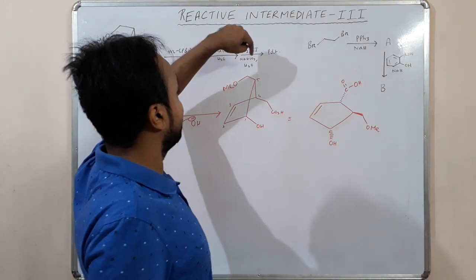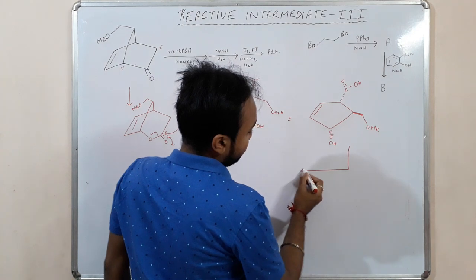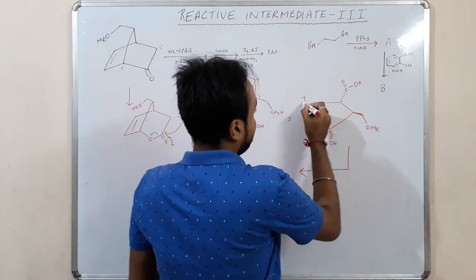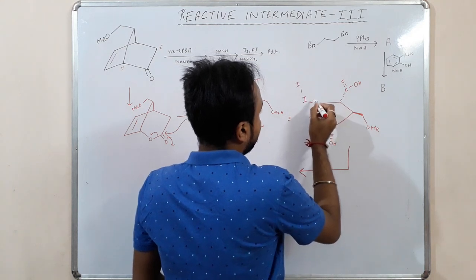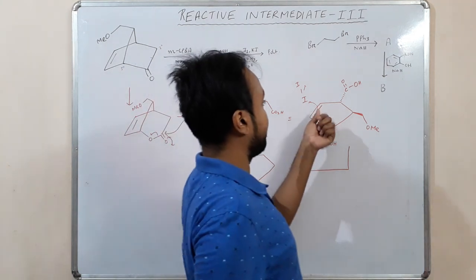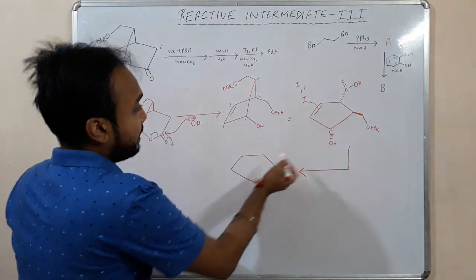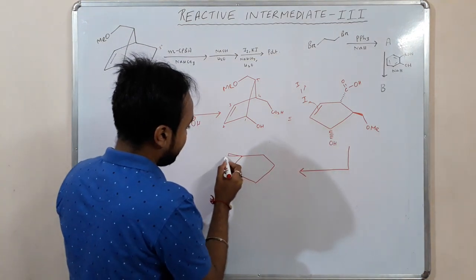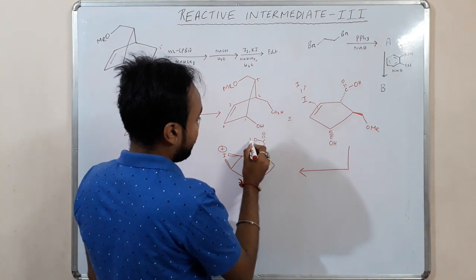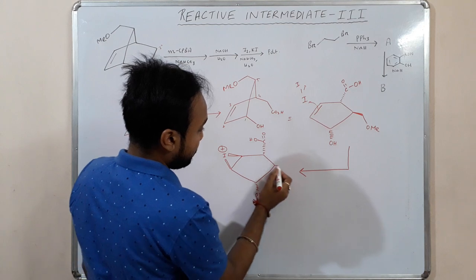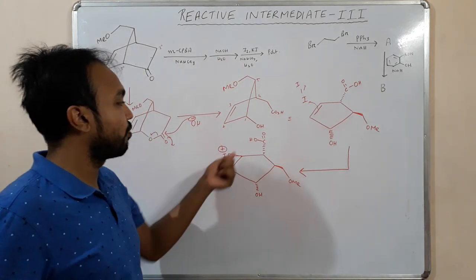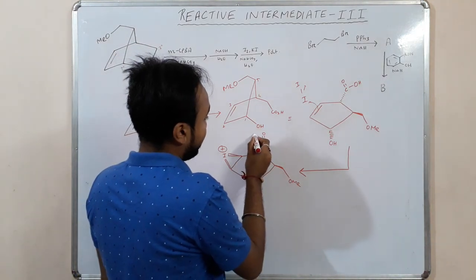Now we have given I2, KI, base and water. So what I2 will do - I2 will attack here. So it goes like this and will form a three-member ring. It will be above the plane because this acid is below the plane and this is also below the plane, so it will be above the plane. Now we have given base, so it will abstract a proton from the acid.